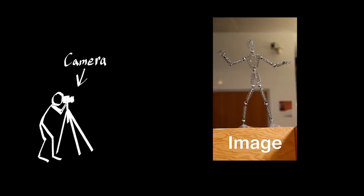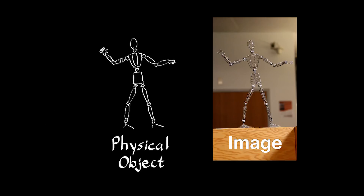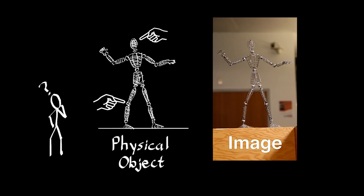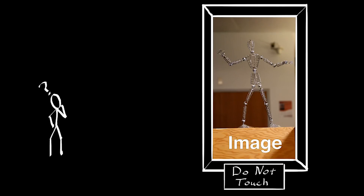Cameras make it easy to capture the way things look. But in the physical world, we learn a lot about objects by manipulating them, by poking and prodding and seeing what happens. And unfortunately, traditional images and video don't really let us do that.